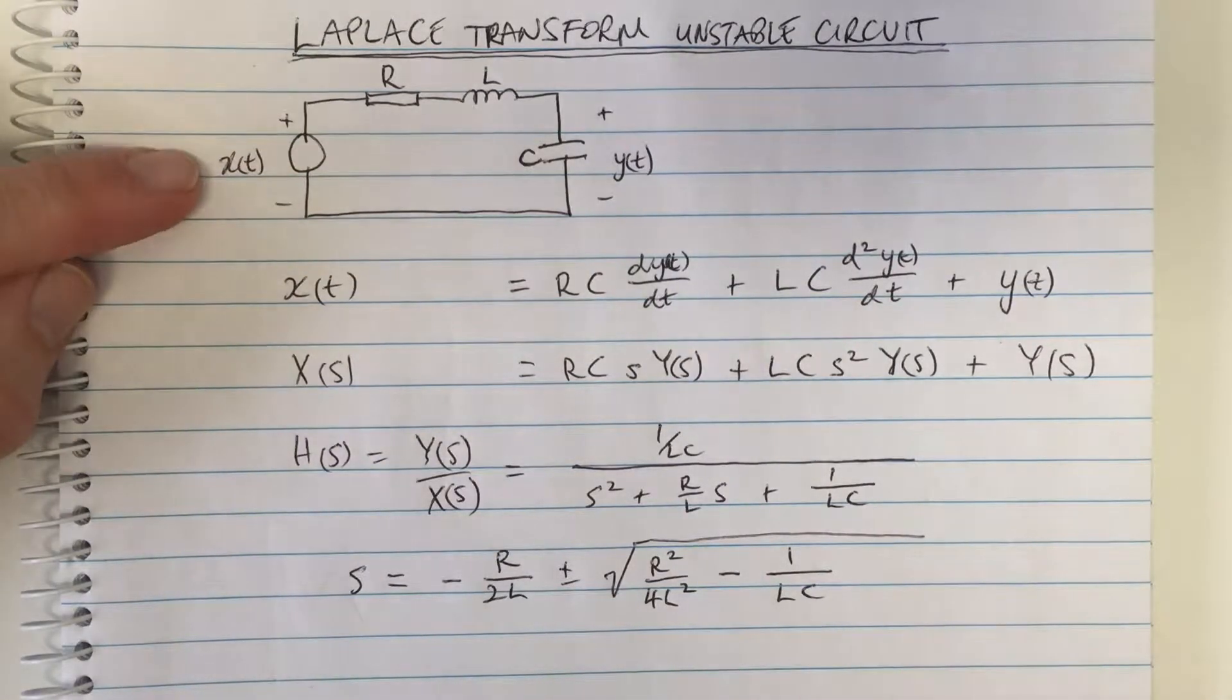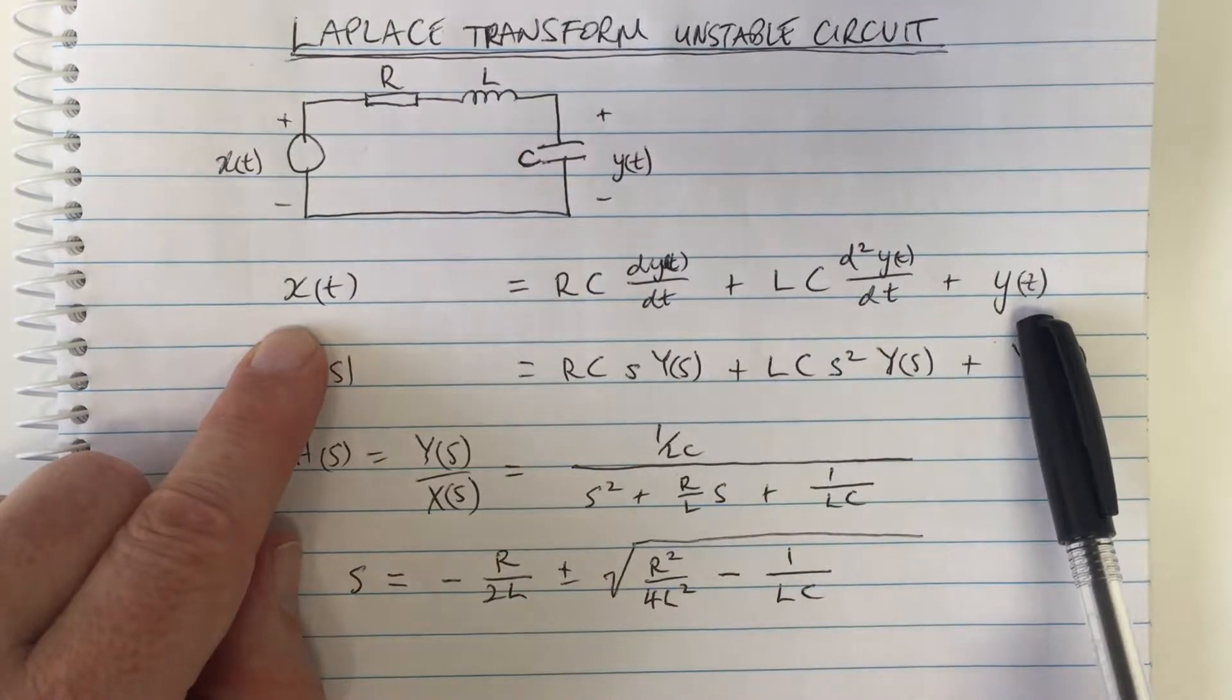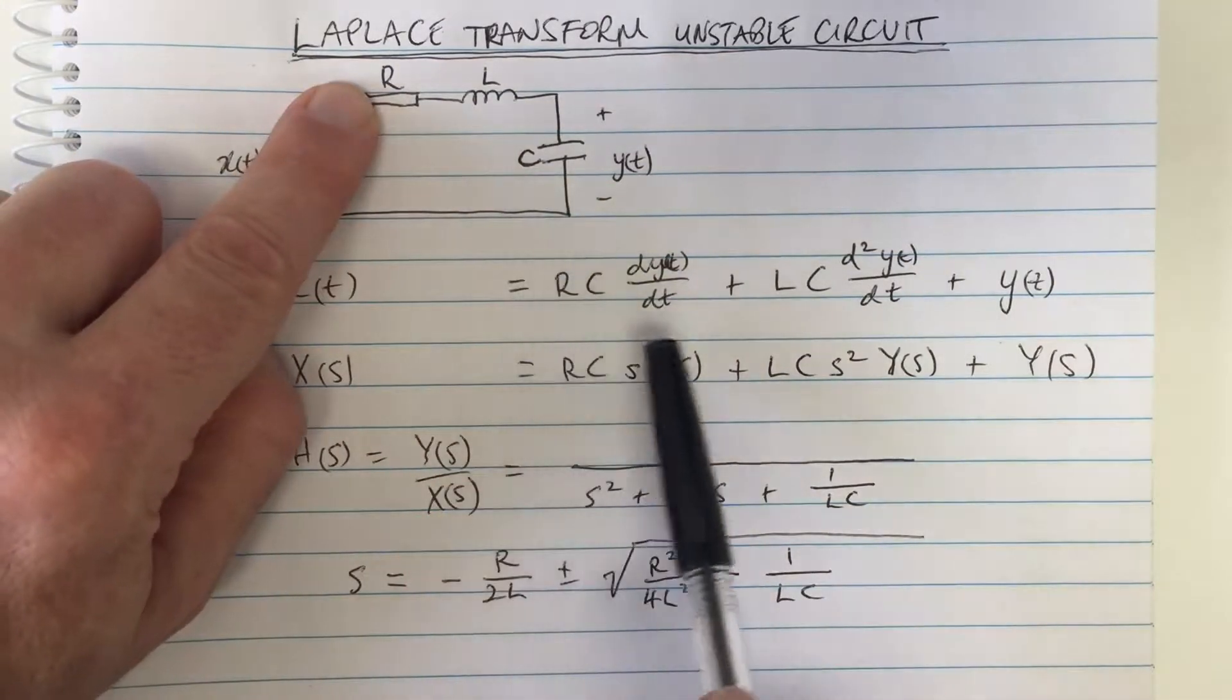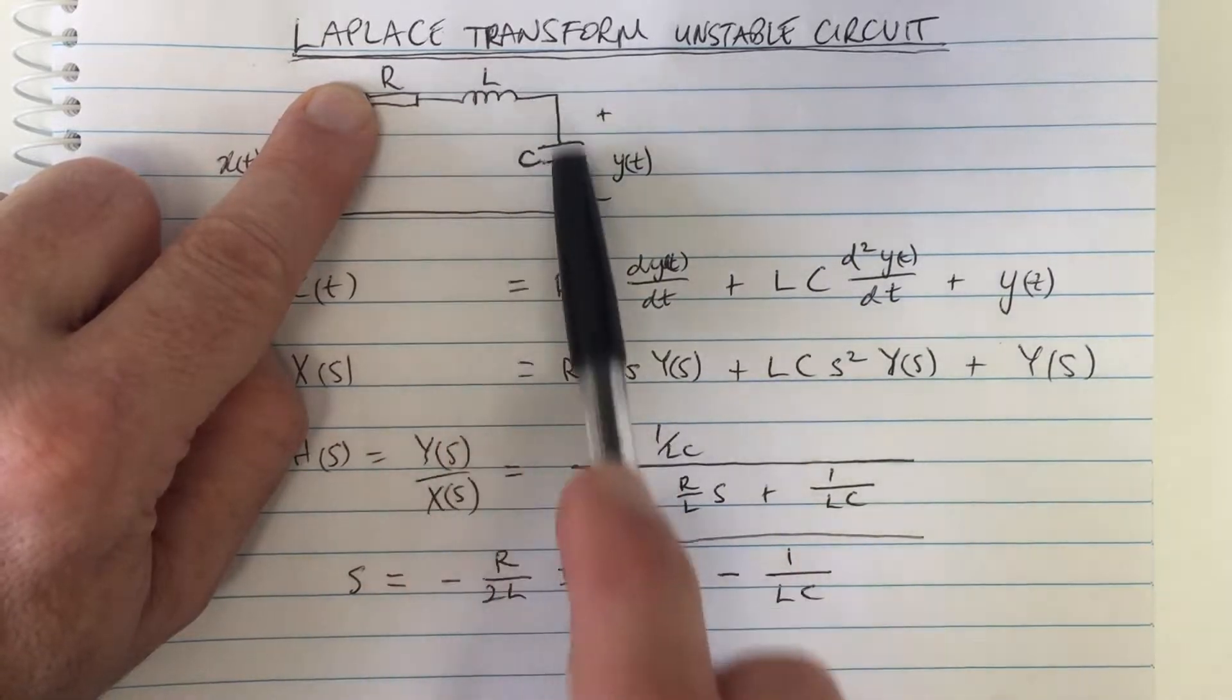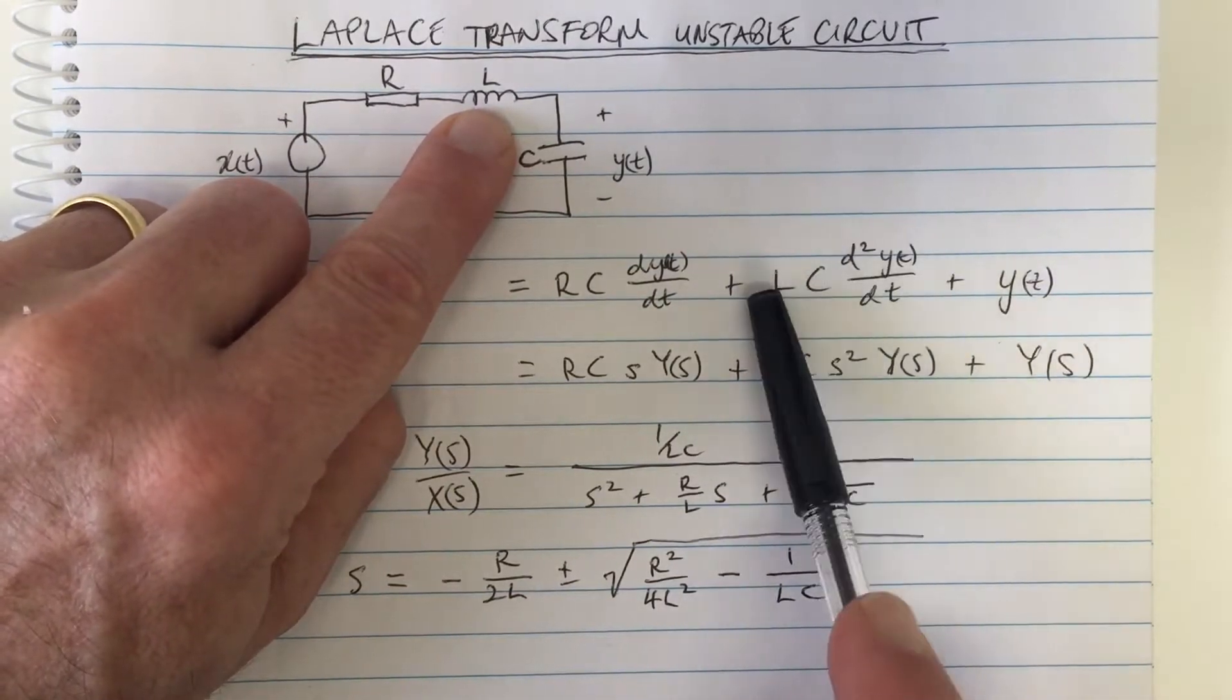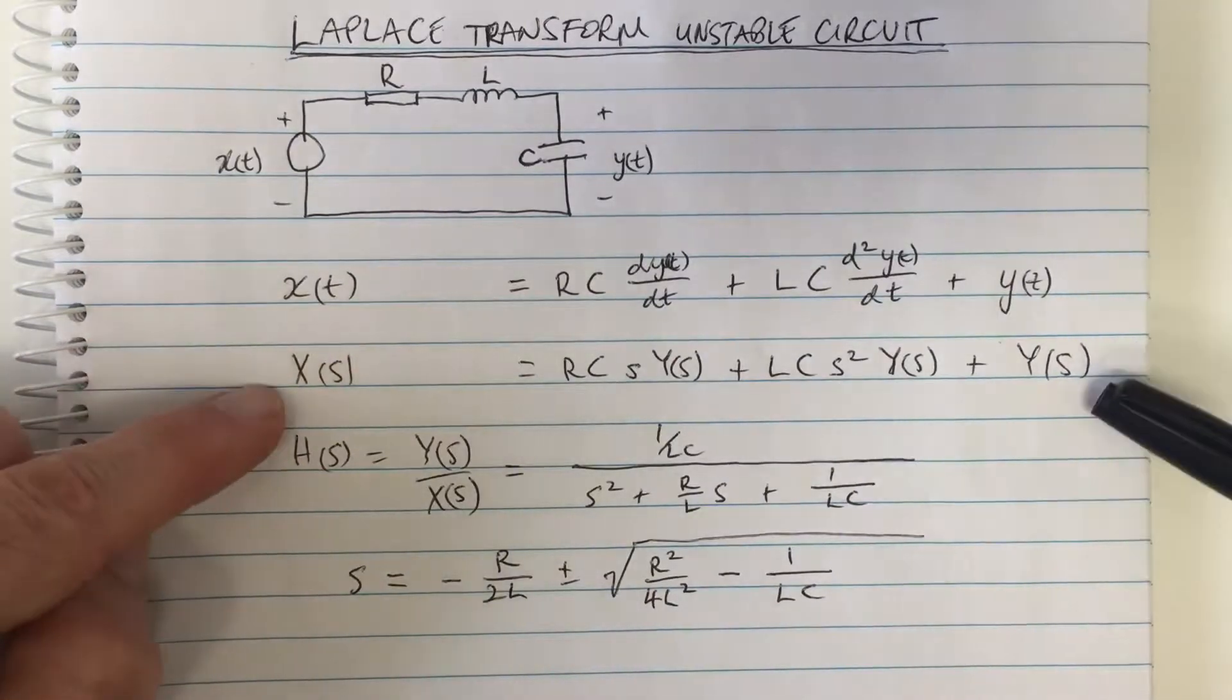Here's our very common RLC circuit, and this is the differential equation for the voltages around the circuit. The voltage x equals all the drops times the current. The current is C times dy/dt. The current through the capacitor is the same as the current around here, and then the current through the inductor times the inductance plus the voltage drop across the capacitor.